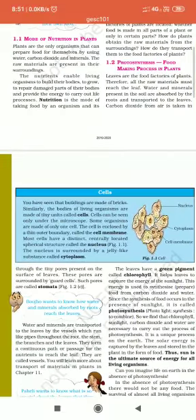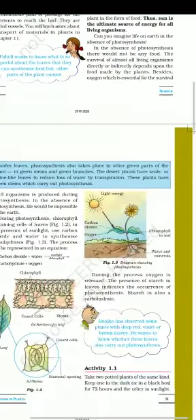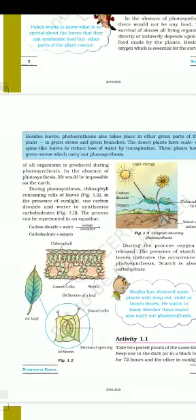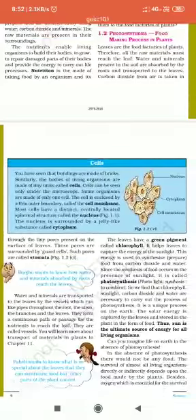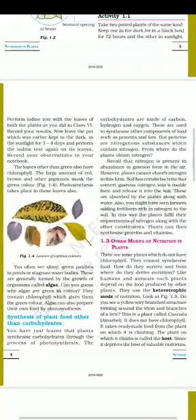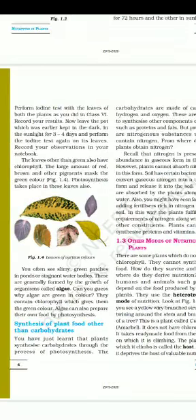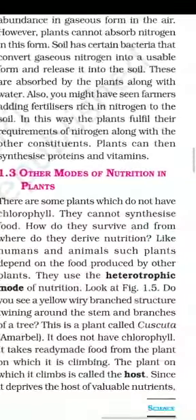We also discussed photosynthesis: what is a stomata, what is chlorophyll, the process of photosynthesis, the diagram of photosynthesis, and in between we discussed cells. After that we discussed photosynthesis in leaves of colors other than green. Now we will discuss the heterotrophic mode of nutrition.